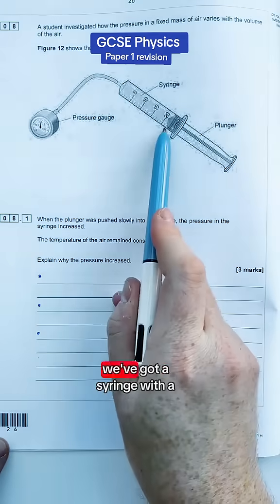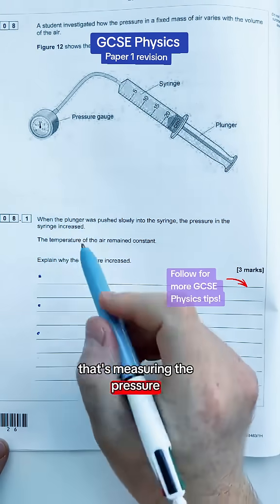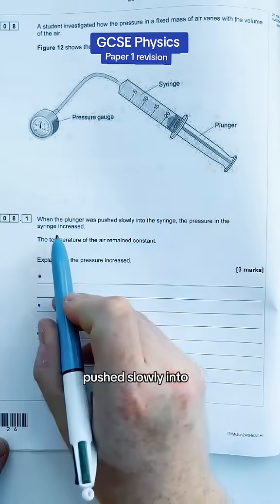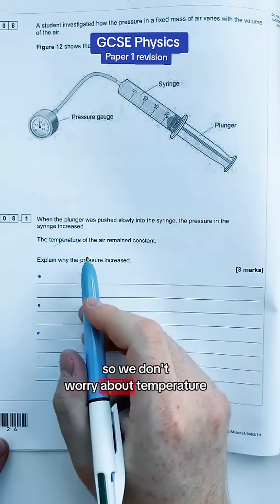So let's have a look at this question. We've got a syringe with a plunger pushing it in, and we've got a pressure gauge that's measuring the pressure. It says, when the plunger was pushed slowly into the syringe, the pressure increased. The temperature does not change, so we don't worry about temperature.